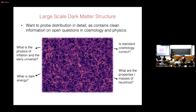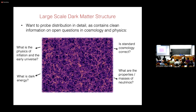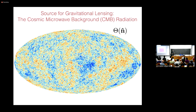The best way to directly map out the distribution of mass and dark matter is gravitational lensing. Gravitational lensing is the effect whereby all mass, including dark matter, gravitationally deflects light that passes by. This gravitational lensing is often studied with light from galaxies, but I'm going to focus on a very special source — namely the cosmic microwave background.